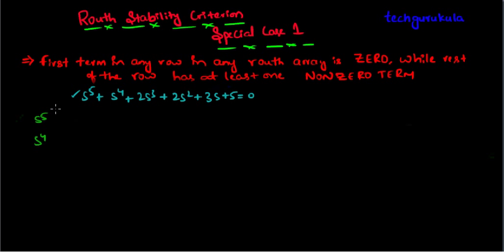S power 5 and S power 4. For this first one, as we have seen, this 5 is odd here. So all these odd term coefficients we need to place in the first row, which is S power 5 is 1, S cube term coefficient is 2, and S power 1 coefficient here is 3.